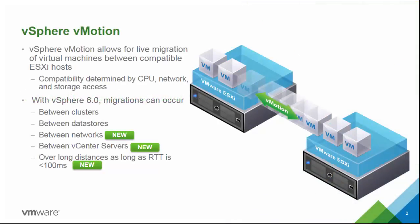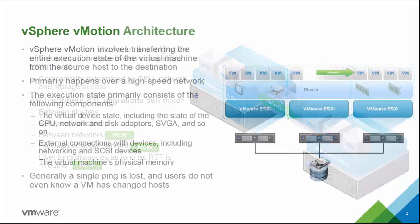VMware vMotion allows for live migration of virtual machines between compatible ESXi hosts. Compatibility is determined based on a number of factors, including CPU, network, and storage access. We can migrate virtual machines between hosts, between clusters, and between data stores. New in vSphere 6, we also have the ability to migrate between networks, between vCenters, and over long distances — which I'll expand on in the next couple of slides.